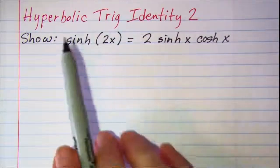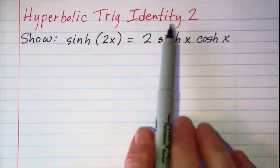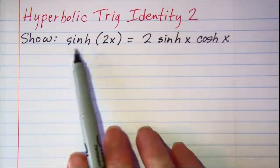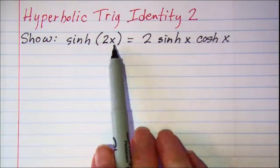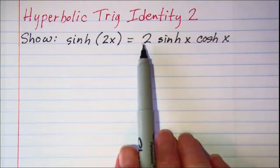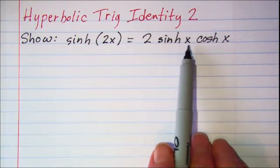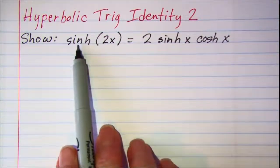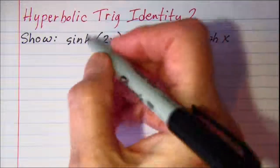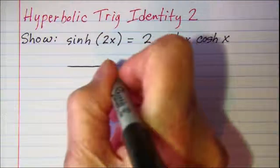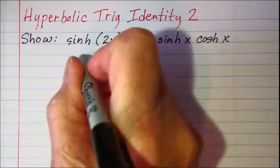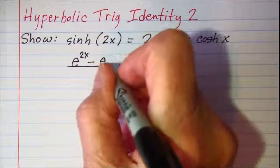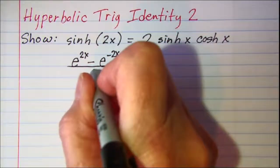In this video we will be working on a hyperbolic trig identity. The identity that we wish to show is the hyperbolic sine of 2x is equal to 2 times the hyperbolic sine of x times the hyperbolic cosine of x. The hyperbolic sine of 2x is defined to be e to the 2x minus e to the negative 2x divided by 2.